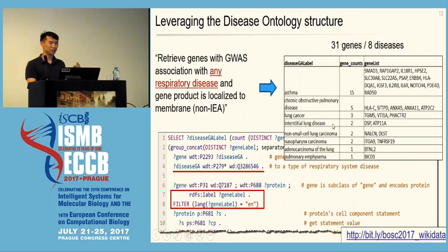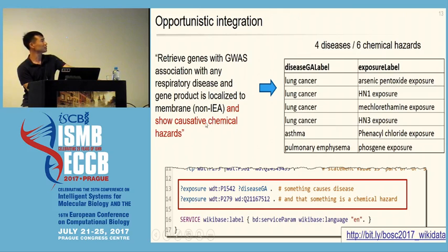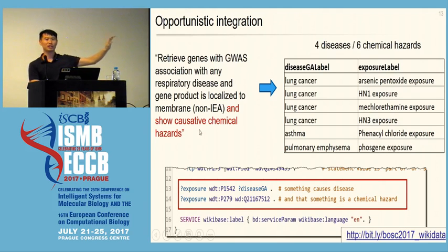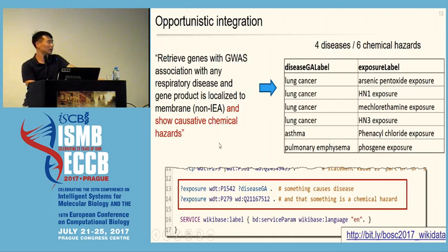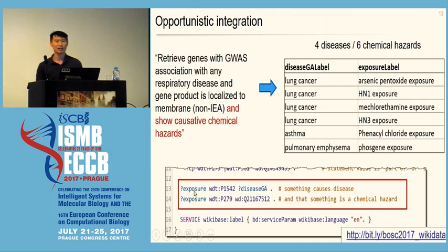Finally, everything I've shown is integration among data resources we loaded. But if you want to bridge into areas of the Wikidata graph we didn't directly load, you can do that too — for example, querying chemical hazards. Taking those 31 genes and looking at which ones have associated chemical hazards that could potentially cause that disease: this is data loaded by people at the CDC's occupational safety and health organization. Adding just two lines to the SPARQL query yields four diseases and six chemical hazards — building up quite complex queries, in this case 17 lines, spanning many different data resources.